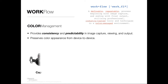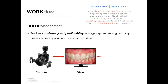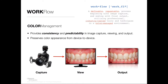Color management is basically very simple. It helps you provide consistency and predictability throughout the image capture, viewing, and output process as far as your color appearance goes. So it means we capture the image correctly in camera with accurate color and the correct exposure.